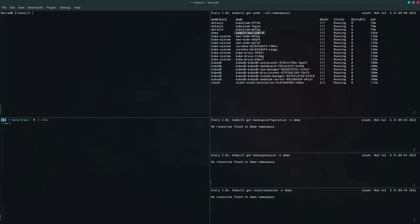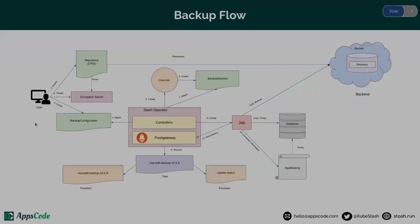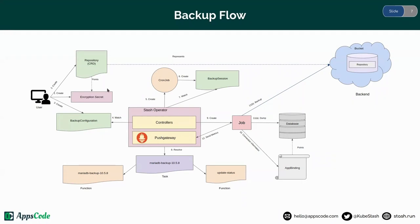Now let's take a backup of this data using Stash. This is our backup flow: the user has to create an encryption secret first, which will be used by Stash to encrypt the data in the backend. Then the user creates a repository, which contains this encryption secret along with the bucket name and prefix defining where the backup data will be stored. Then the user creates a backup configuration containing the backup target and schedule, which defines how frequently a backup will take place. Stash operator watches for backup configurations and creates a cron job according to the schedule.